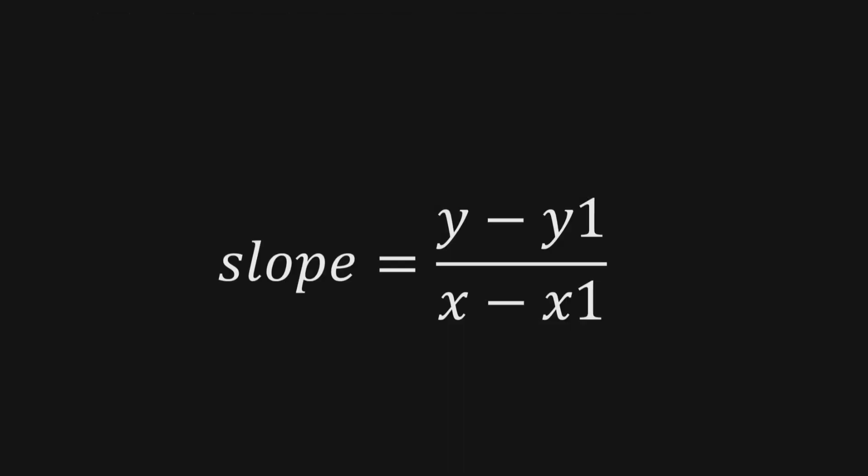The slope of the line connecting the points p and q is equal to the y-coordinate of p minus the y-coordinate of q divided by the x-coordinate of p minus the x-coordinate of q.